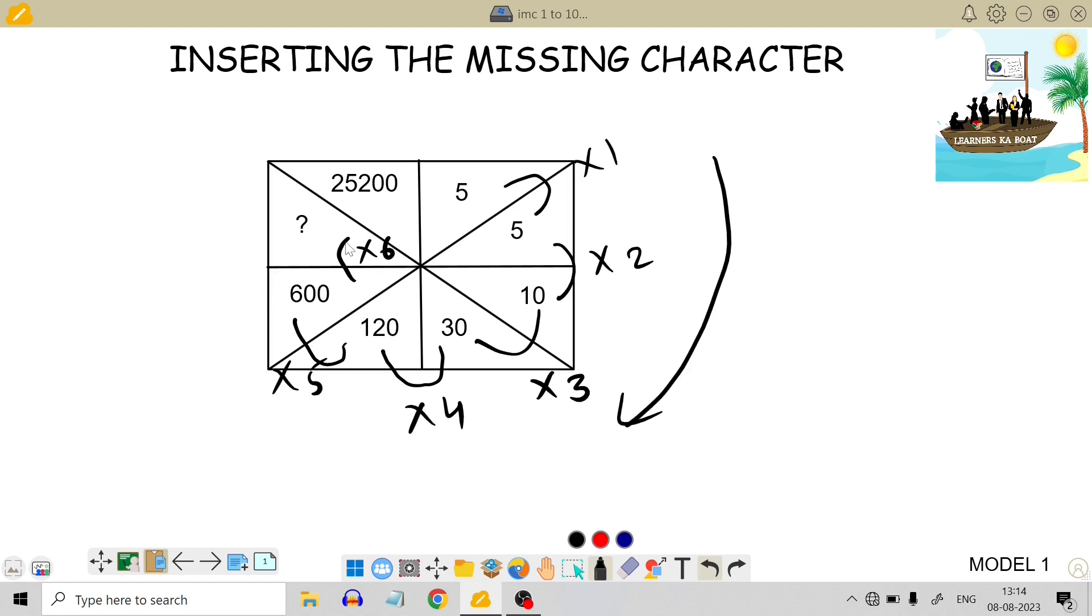600 x 6, 6, 36, 2 zeros. So, the answer is 3600. And the question mark is 3600. So, the answer is 3600.